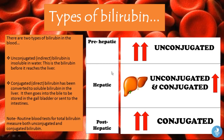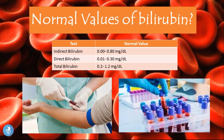A key table helps differentiate the cause of jaundice. Pre-hepatic causes produce high levels of unconjugated bilirubin. Hepatic causes — primary liver disease — produce increases in both unconjugated and conjugated bilirubin. Post-hepatic jaundice produces increases only in conjugated bilirubin.